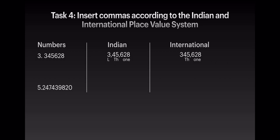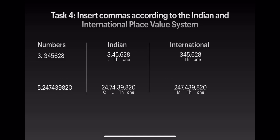The fifth sum is 247439820. In the Indian place value chart — first period has 3 places, all others have 2 — so it is written as 24,74,39,820. In the international place value chart, every period has 3 place values, so it is written as 247,439,820.